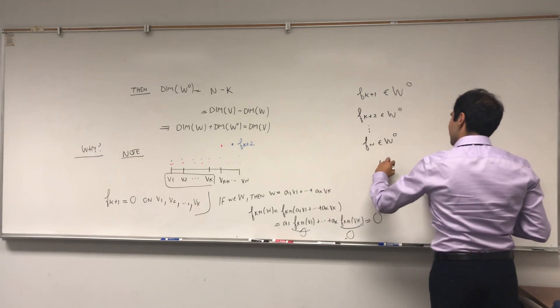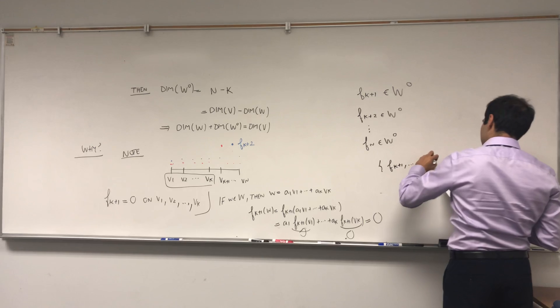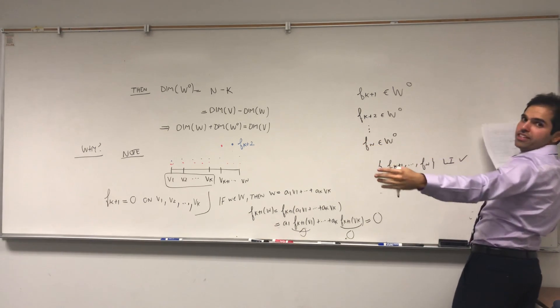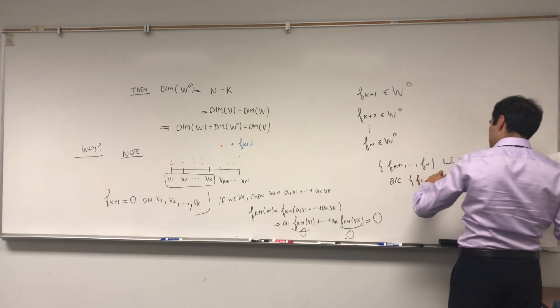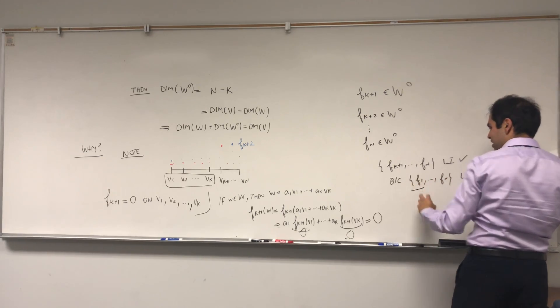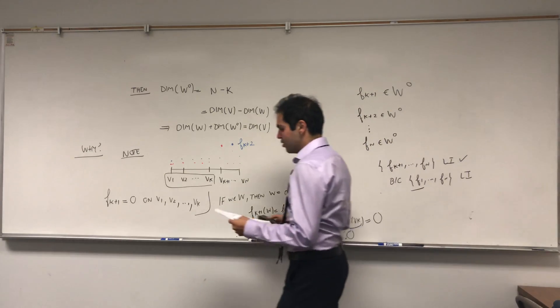Then, well, the question is why is this linearly independent? Well, the bigger set is linearly independent because it's a basis. F1 to Fn is linearly independent because, again, it's a basis for your dual space.